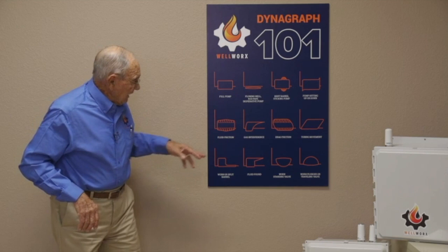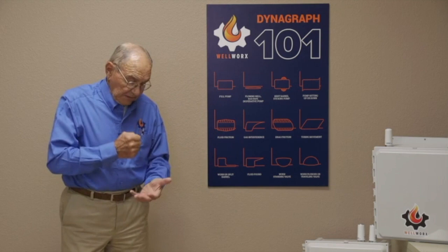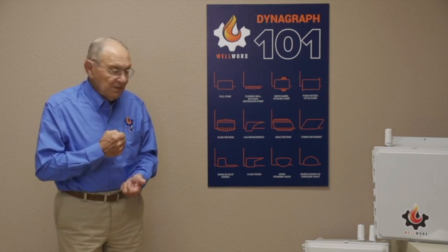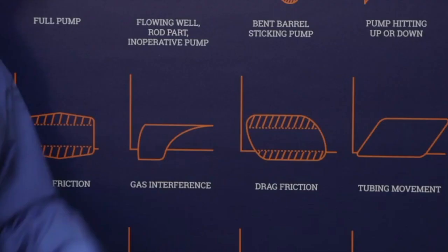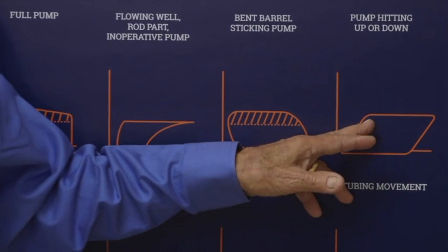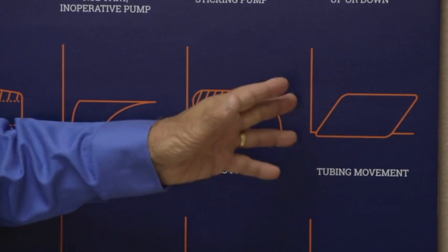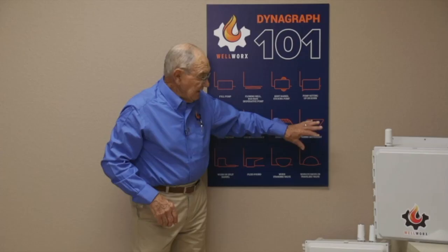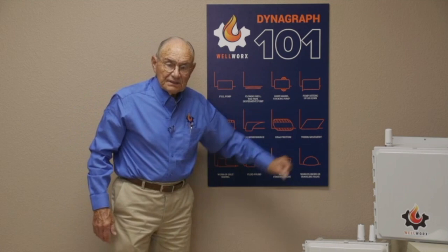We already talked about unanchored tubing briefly — if you don't anchor the tubing, the card leans to the right. When you pick up the fluid load at the start of the upstroke, it takes load off the tubing string. When you take thousands of pounds off that tubing string, it will shorten — it'll contract. That makes the card lean. Then when you get to the top and put the fluid load back on, it elongates. You lose part of the stroke, which is ineffective. So you want to fix that by putting what we call tubing anchors in to make the card look like a full rectangle. It's easy to diagnose if you have unanchored tubing.